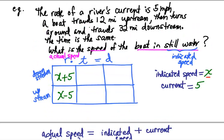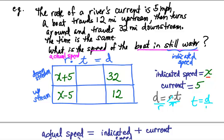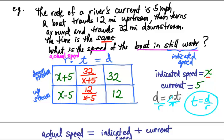The boat traveled 12 miles upstream, so the distance upstream is 12, and 32 miles downstream, so the distance is 32. Now we can fill in the missing time column. Since distance equals rate times time, time equals distance over rate. So the time downstream is 32 over (x plus 5), and the time upstream is 12 over (x minus 5). Now we look at the problem to see the relationship between the two times — here it says the times are the same, so we set them equal.